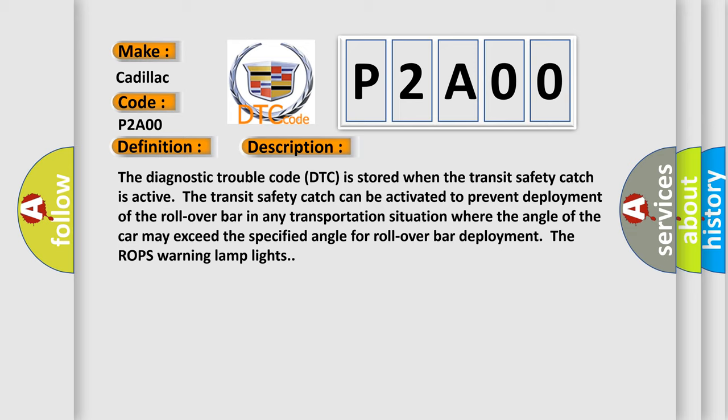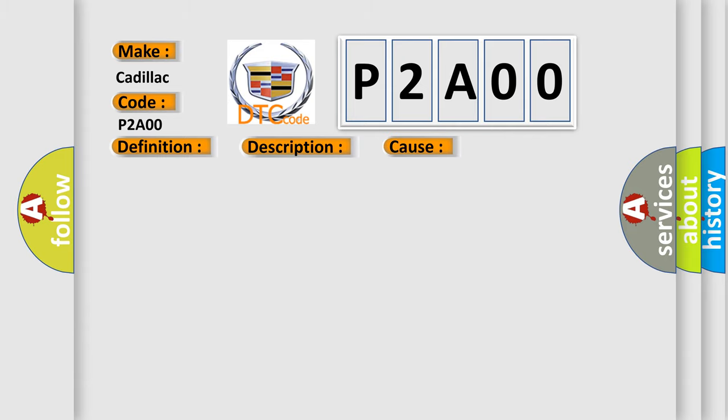The ROPS warning lamp lights. This diagnostic error occurs most often in these cases: Transit Safety Catch is active.